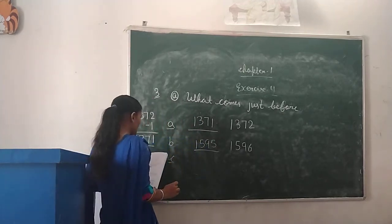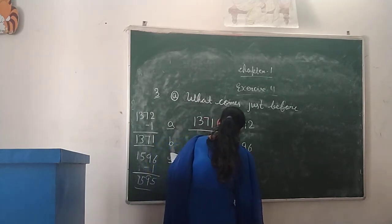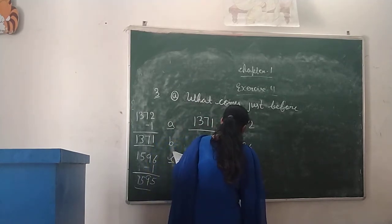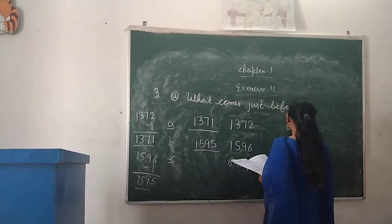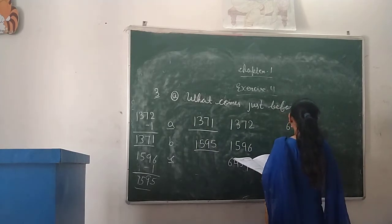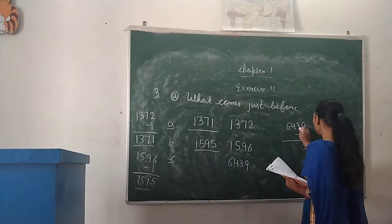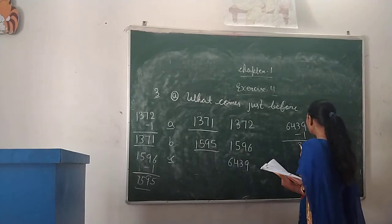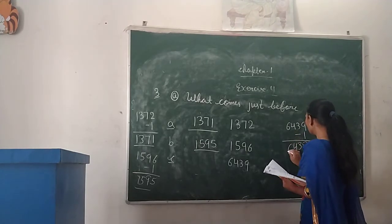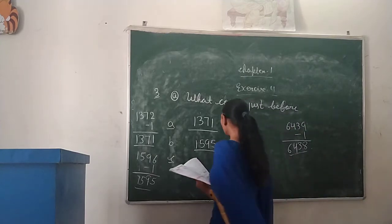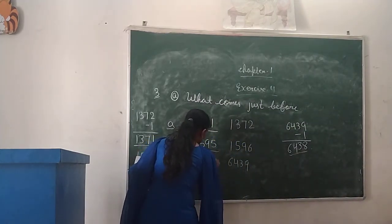Next, Part C: 6,439. We have to subtract 1. 9 minus 1 is 8. 3 minus 0 is 3. 4 minus 0 is 4. 6 minus 0 is 6. So the number is 6,438.